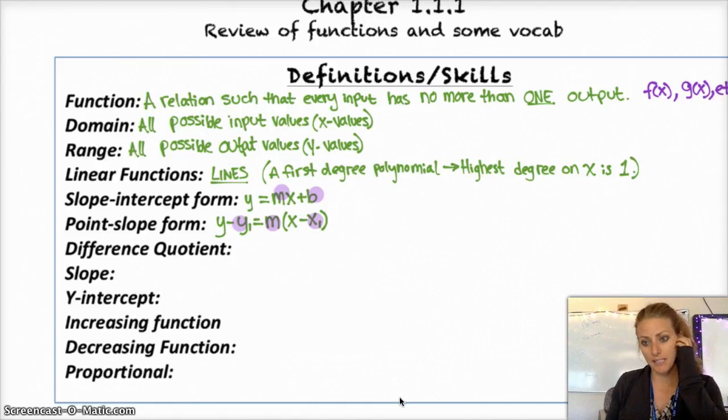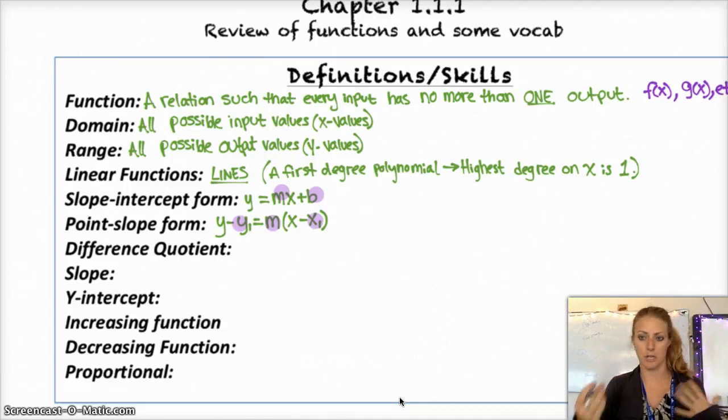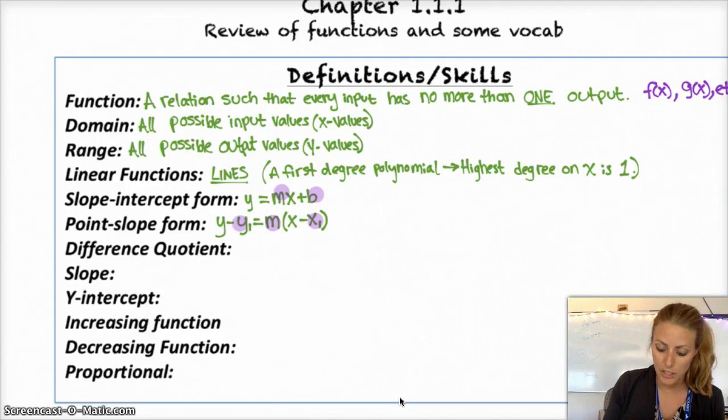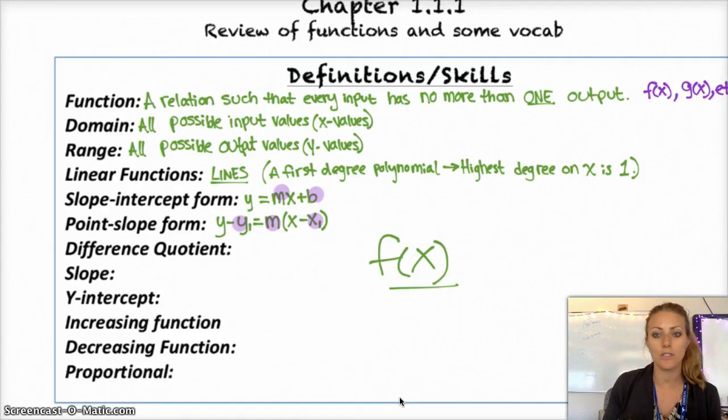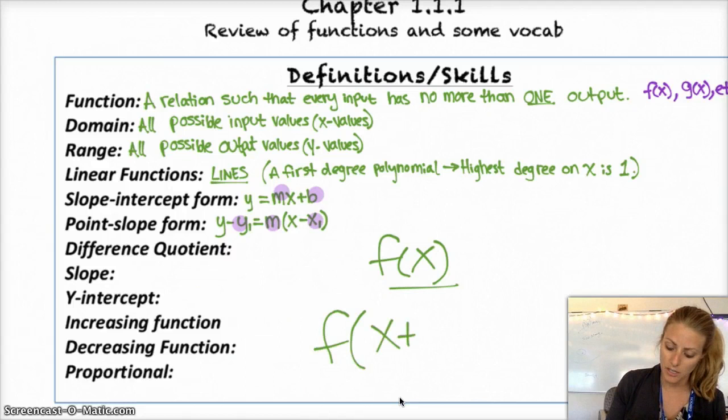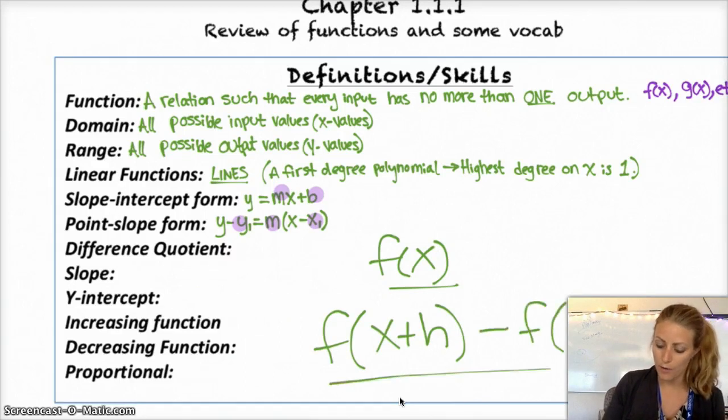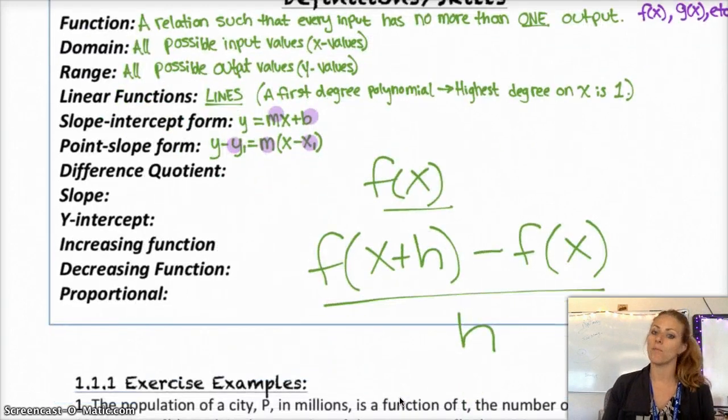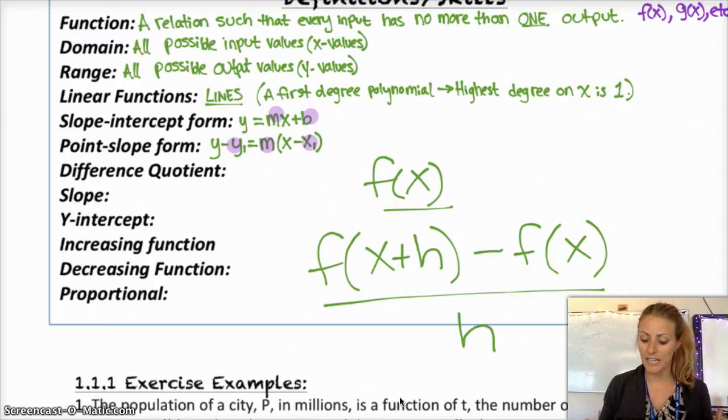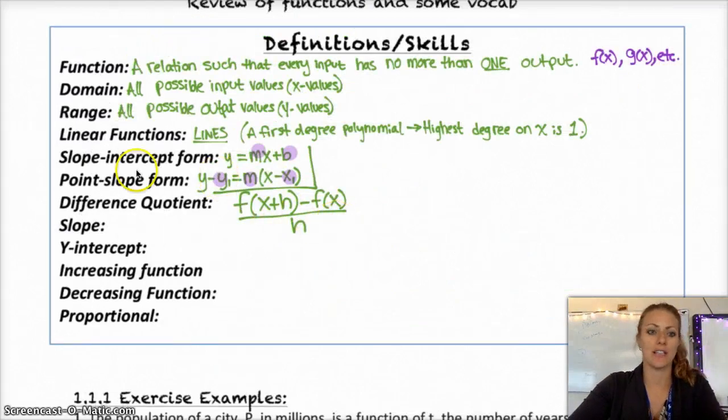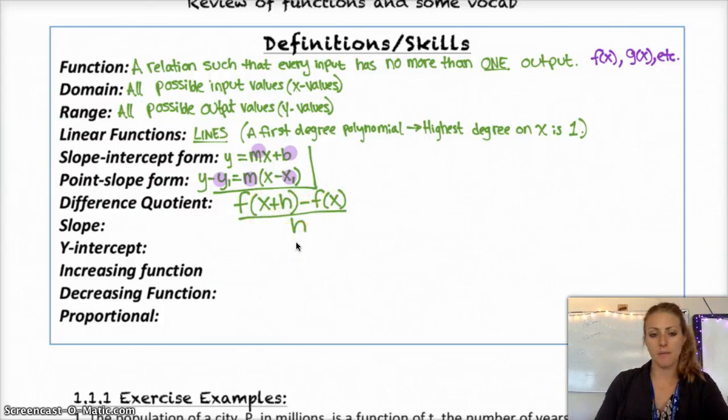The difference quotient is probably something new, but I would like you to start getting comfortable with what it is and how to use it because once we get into derivatives and limits, you'll be using this a lot. The difference quotient is the following. For any function f of x, the difference quotient is f of x plus h minus f of x all over h. So there it is nice and neat for you. Let's do a quick example.